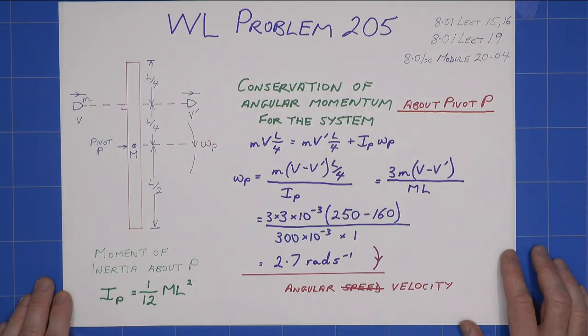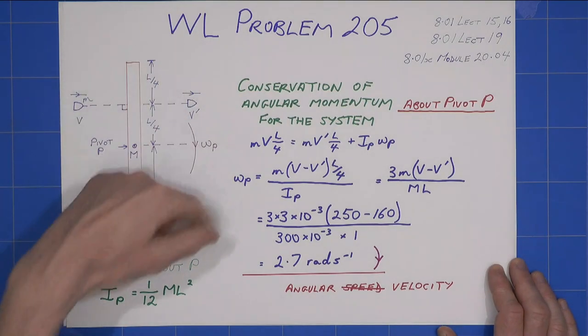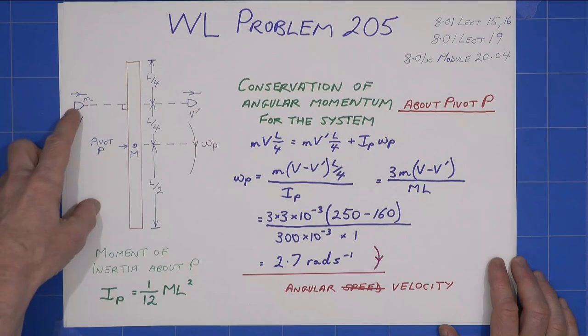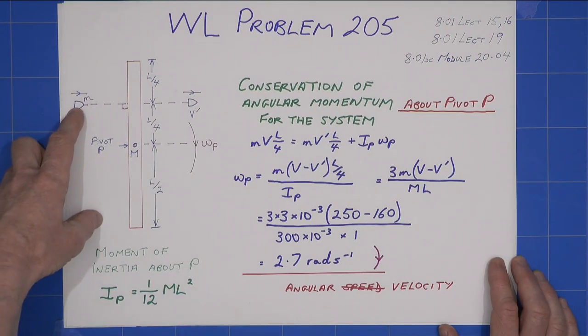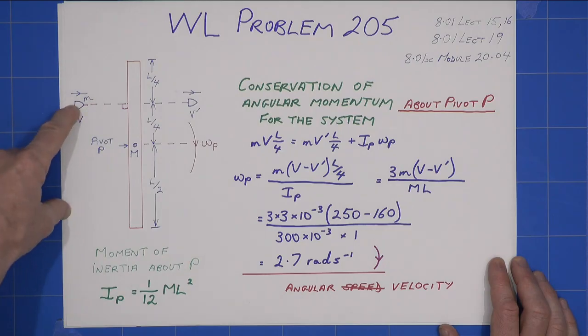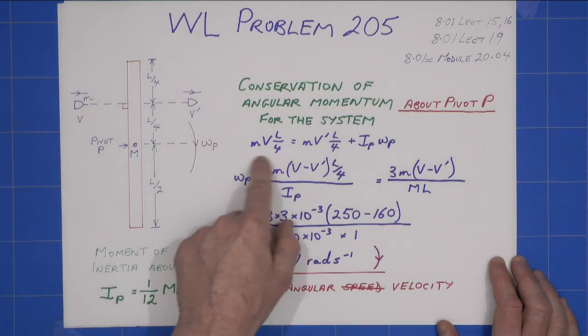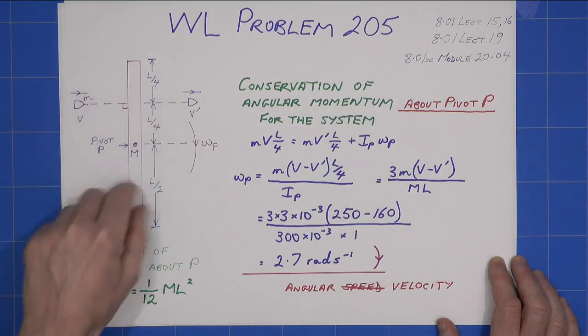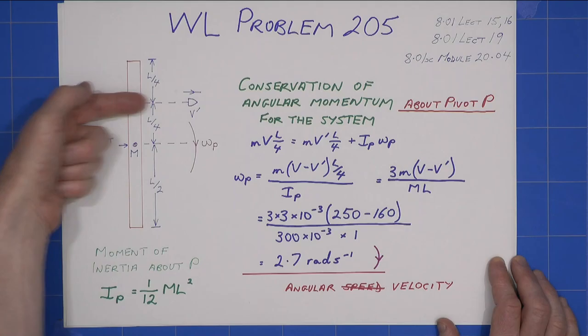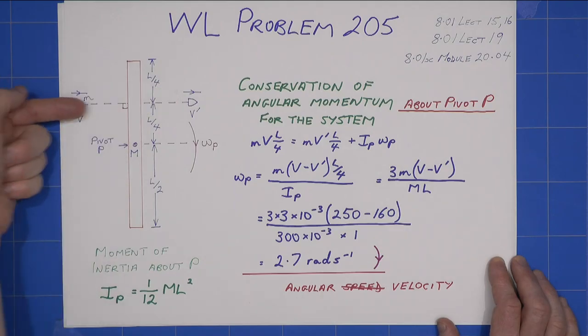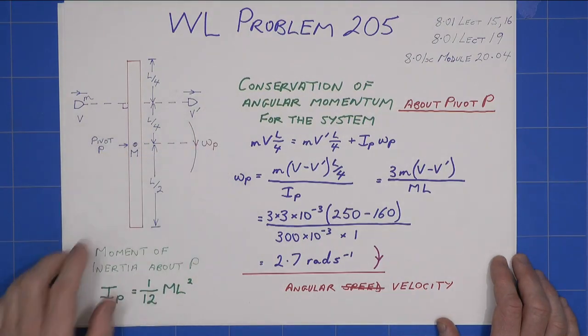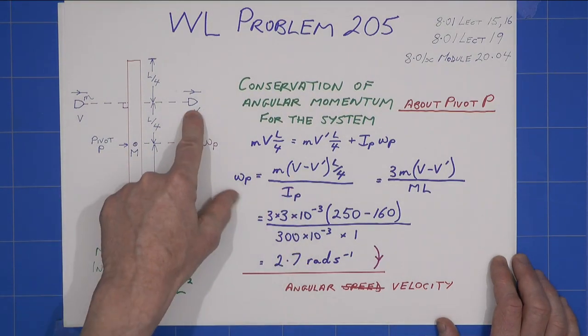The initial, and we consider the system. It's important to consider the whole system. Angular momentum is conserved. The initial angular momentum is only due to the bullet, and it's this term here. It's mv times l over 4, which is the perpendicular distance. I am taking it from the diagram that the bullet hits the rod perpendicularly. So, after it leaves, it has a new velocity v prime.